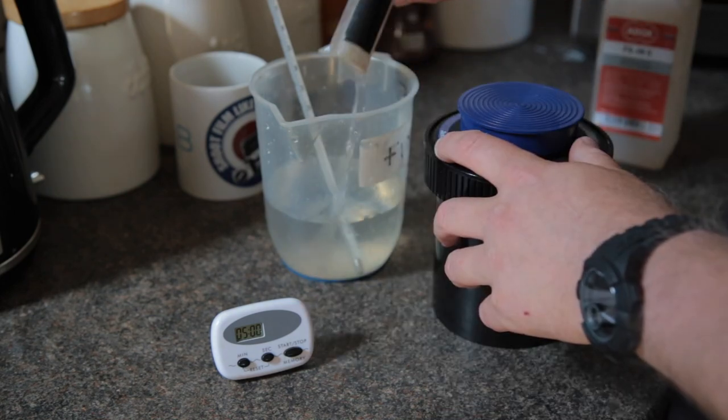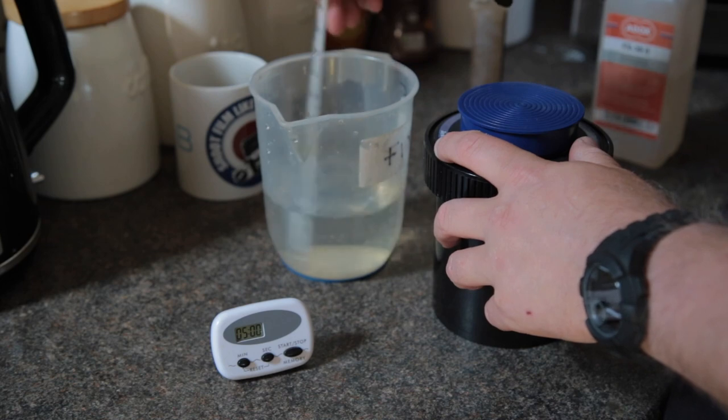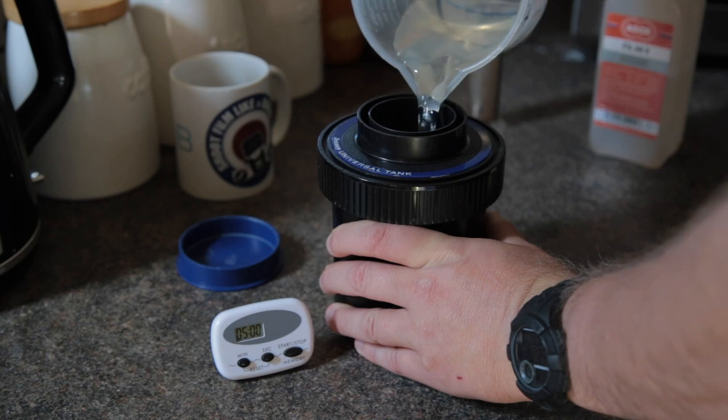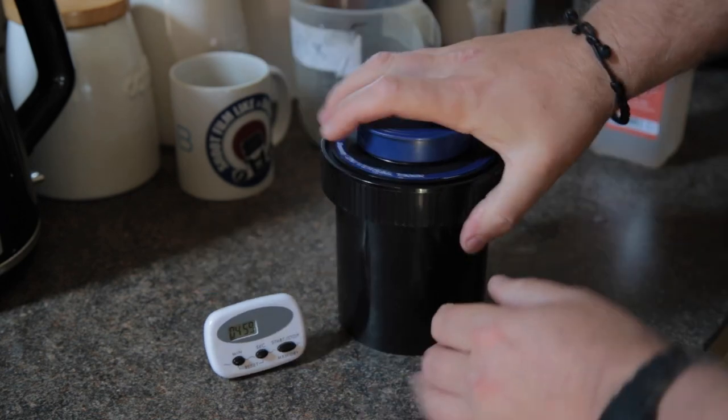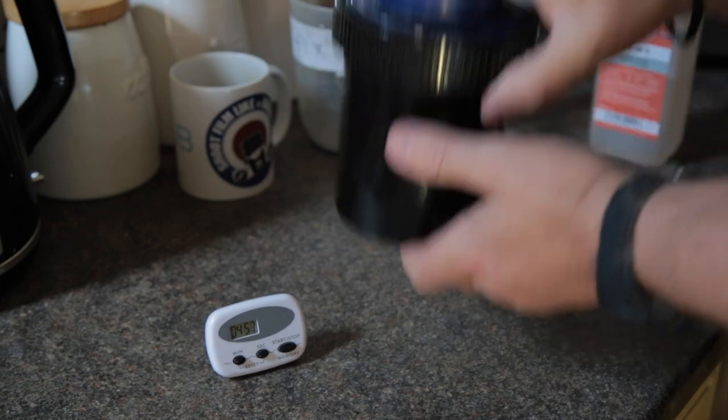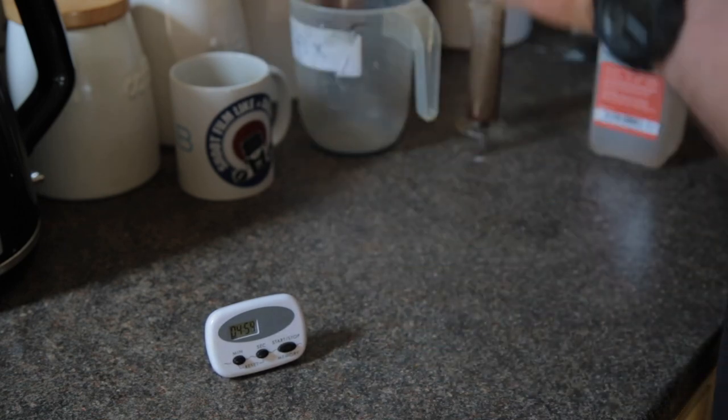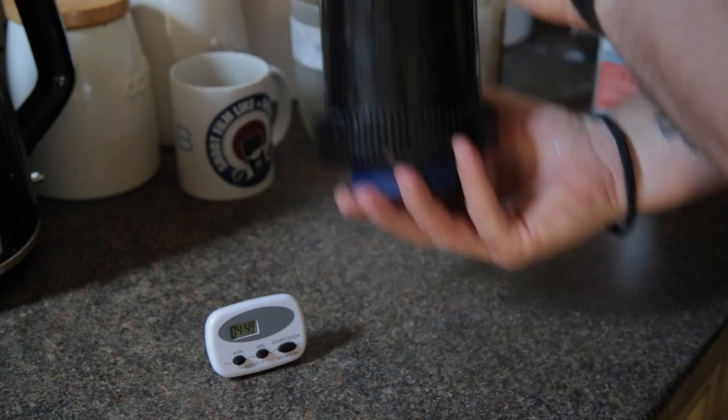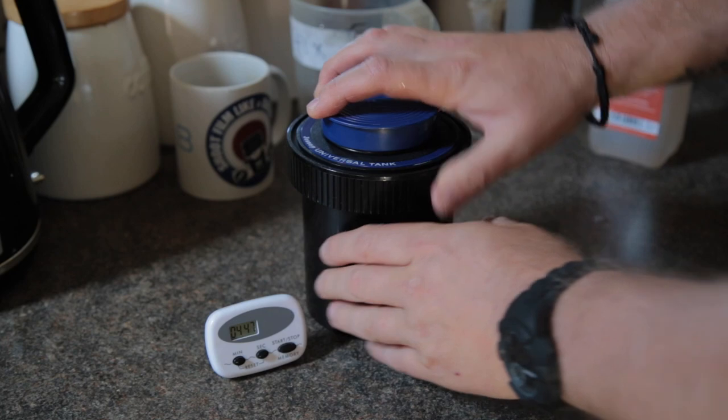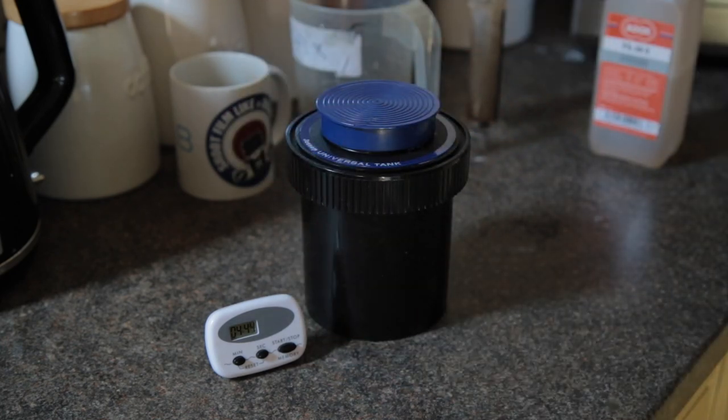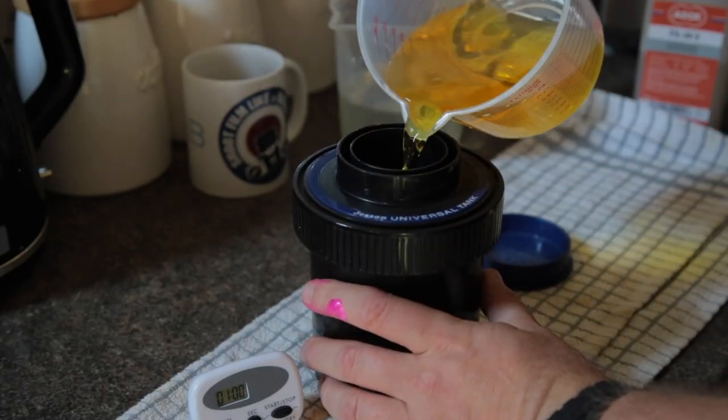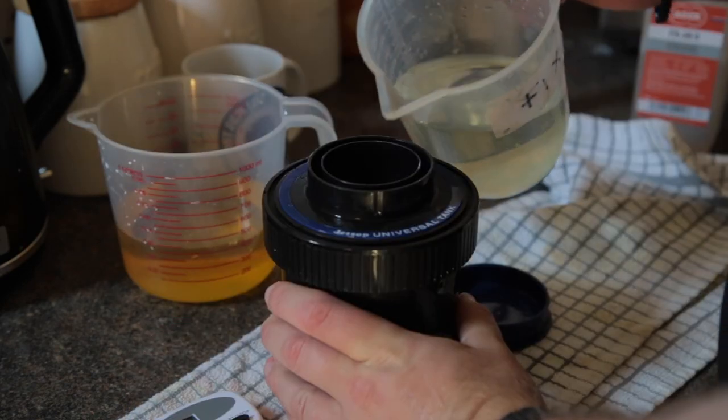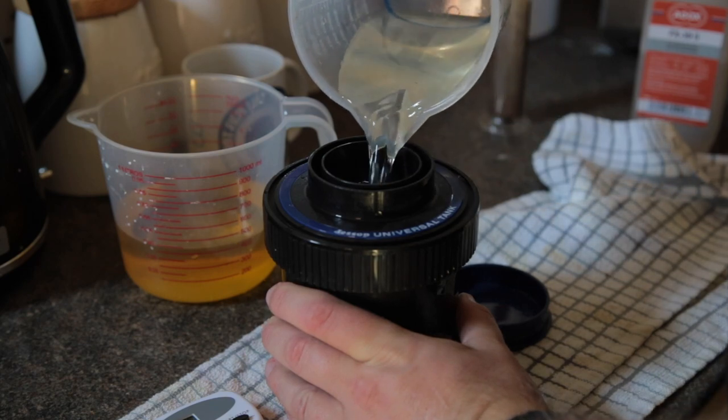First up in the development was the Orvo film, which I developed in FX39, one part to nine. The normal time for this is seven minutes with that film, but I reduced that time to just five minutes, like I said earlier, as I shot the film at 50 instead of 100 ISO. Five inversions to start, and then four inversions on the minute each minute.